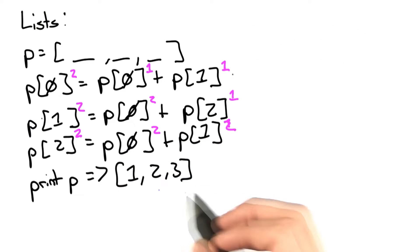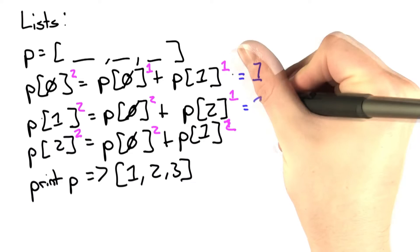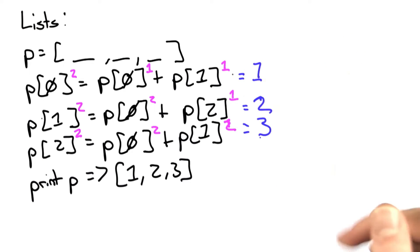And we know based on the final values that this equation equals 1, this one equals 2, this one equals 3.